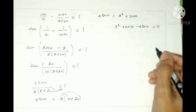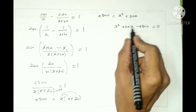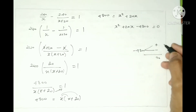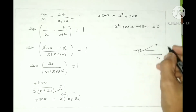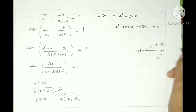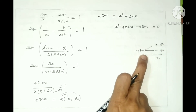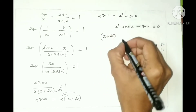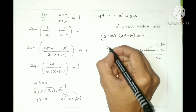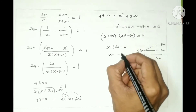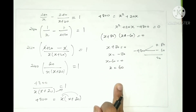We solve this quadratic equation by factorization. For minus 4800 with a sum of 20, we find 80 and 60: 80 minus 60 equals 20, and 80 multiplied by 60 equals 4800. So the factors are x plus 80 and x minus 60 equals 0, giving x equals minus 80 or x equals 60.